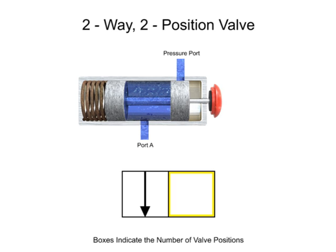The second box corresponds to the second position of the valve. Therefore, two T's are added to illustrate the lack of fluid flow in the second position.